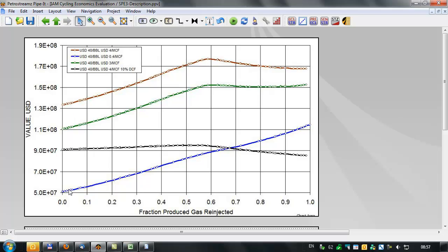The brown, green, and blue curves here represent different oil and gas prices, forty dollars per barrel and four dollars per mcf on the brown curve. On the green curve we've dropped the price of the gas somewhat and even further on the blue curve.